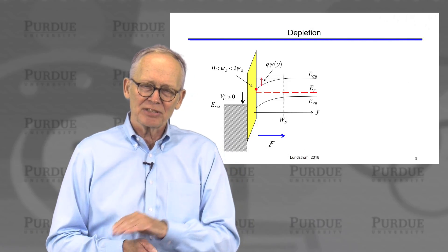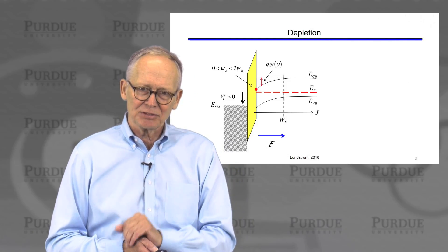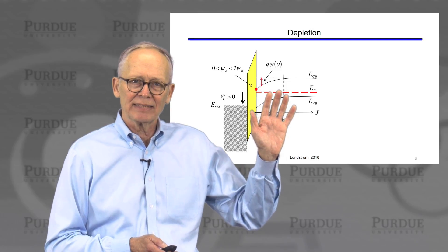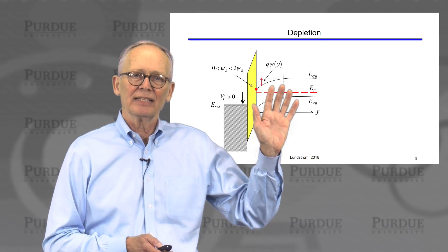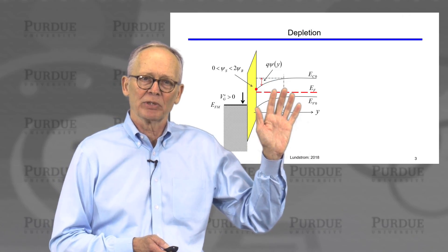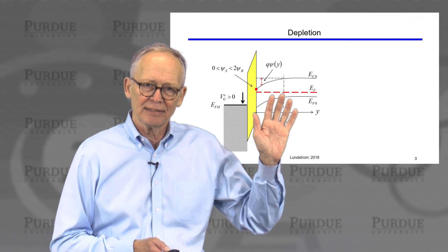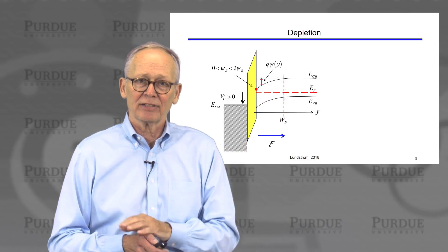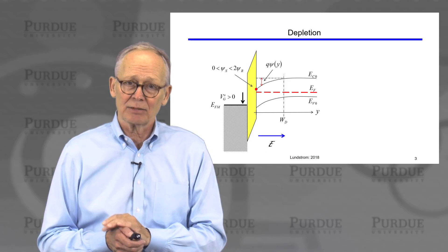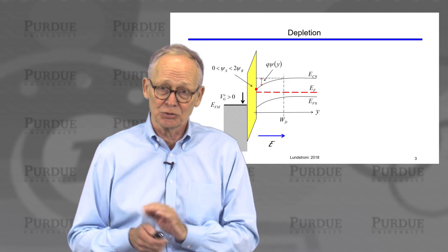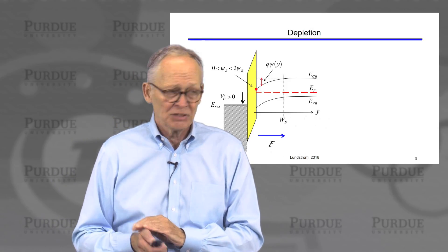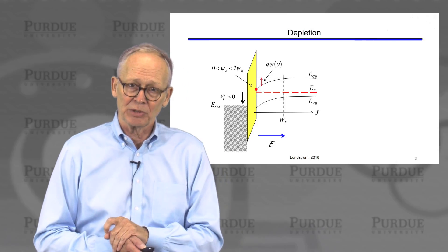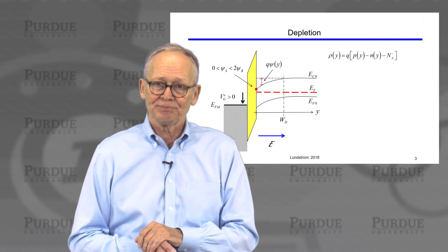There isn't an abrupt edge to the depletion region — it's kind of smooth — but we approximate this by saying we're completely depleted of mobile carriers to a width W_D. After that, the number of mobile carriers is exactly equal to the doping density and everything is neutral. So the electric field only exists in this surface region where we have some charge.